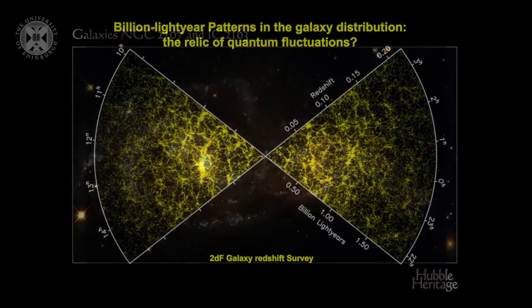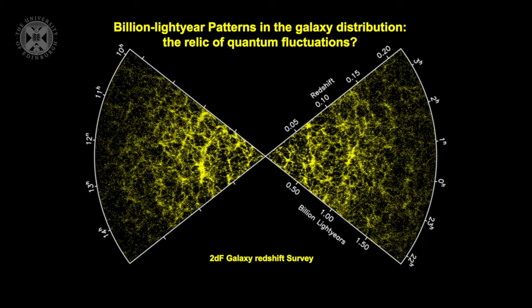And if we look on a larger scale to map of the distribution of the galaxies in space, we can see patterns in them that are hundreds or billions of light years across. And these, as far as we can tell, are the residue of these amplified quantum fluctuations that existed in a time when the vacuum energy was much larger than today.